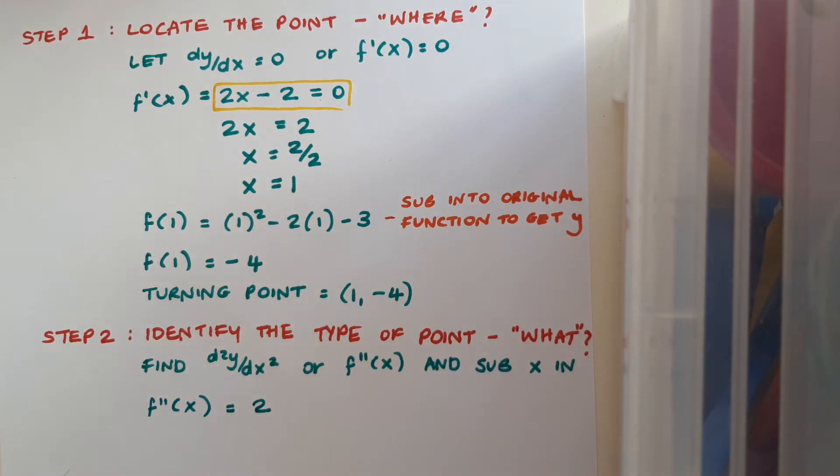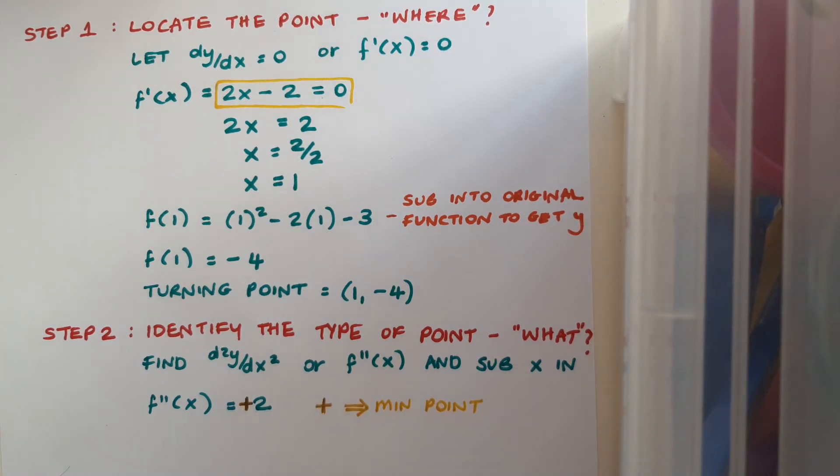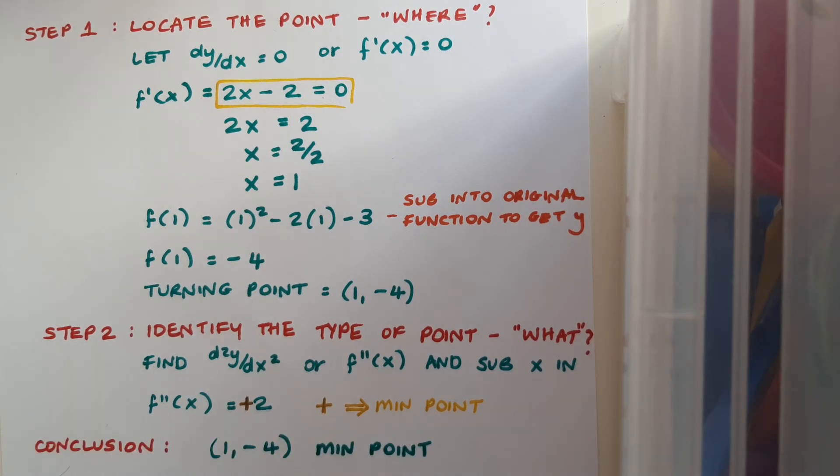Now it's not the 2 itself that's of use to me here, it's whether my result is positive or negative. Notice, by the way, I've written sub x in, but there's no x's in this, so I don't need to fill anything in in this case. If there was an x at this stage, I would need to put my x value into my second derivative. If I just get a number, that's fine too. But like I said, what's really important here is whether my result is positive or negative. Clearly 2 is positive, and if I get a positive result at this second derivative stage, that tells me that I've got a minimum point. Conversely, if I got a negative result, it would mean that I had a maximum point. And now finally, I'm going to conclude. I'm going to write down the point and the type of point that it is. So my point is (1, -4), and it's a minimum point.